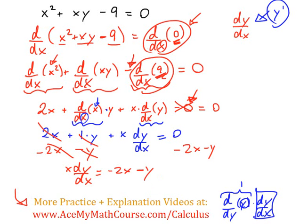So then, of course, we want to isolate dy/dx. So I can just divide both sides of the equation by whatever dy/dx is multiplying. In this case, just an x. So they cancel out over here.